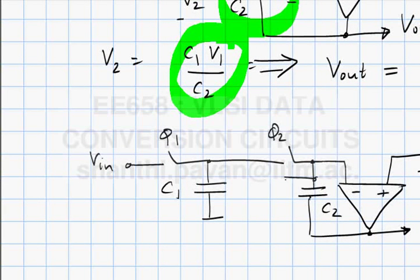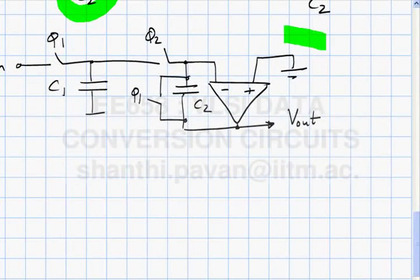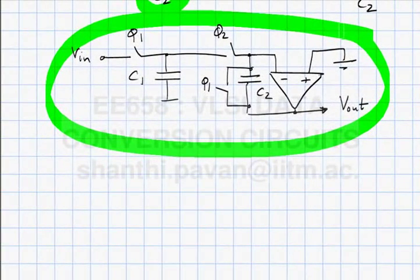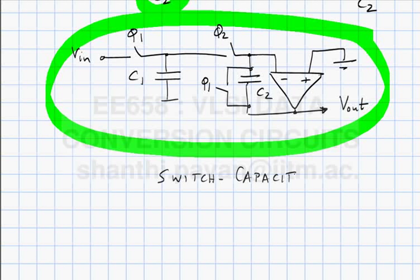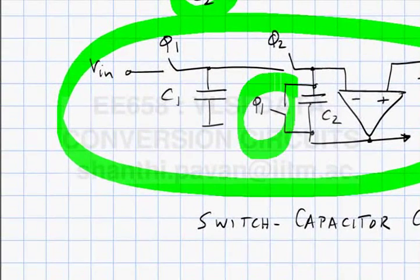The output is valid in phi2, so I should short capacitor C2 in phi1. This whole circuit has only switches, capacitors, and op-amps — a very simple example of a family of analog circuits called switched-capacitor circuits, where the idea is to play around with charge and transfer charge from capacitor to capacitor. If I did not discharge C2 every cycle, charge would keep accumulating on C2.